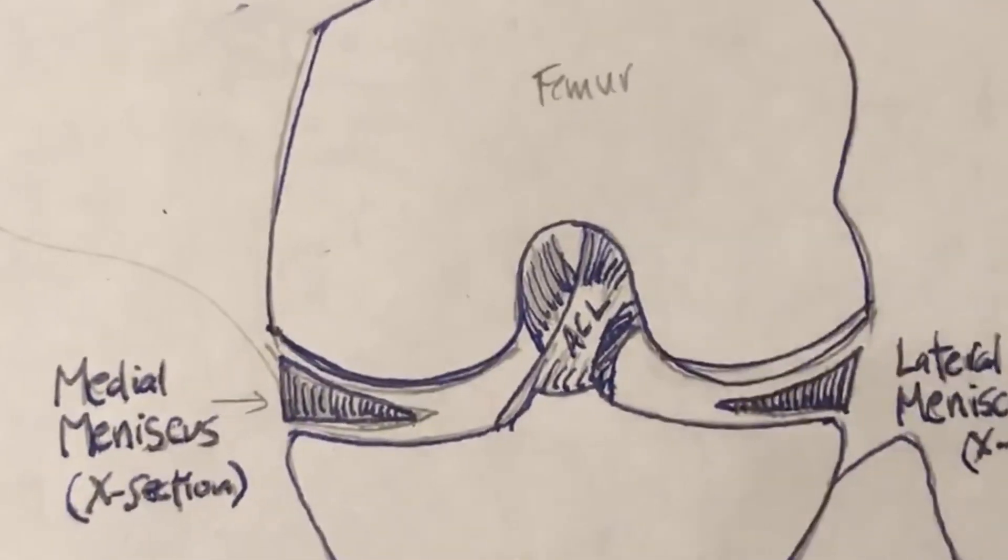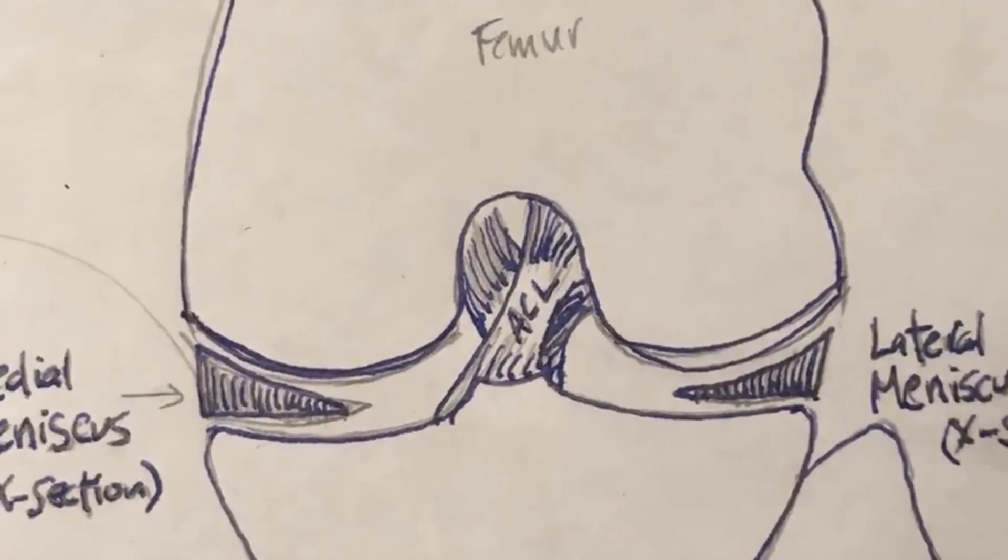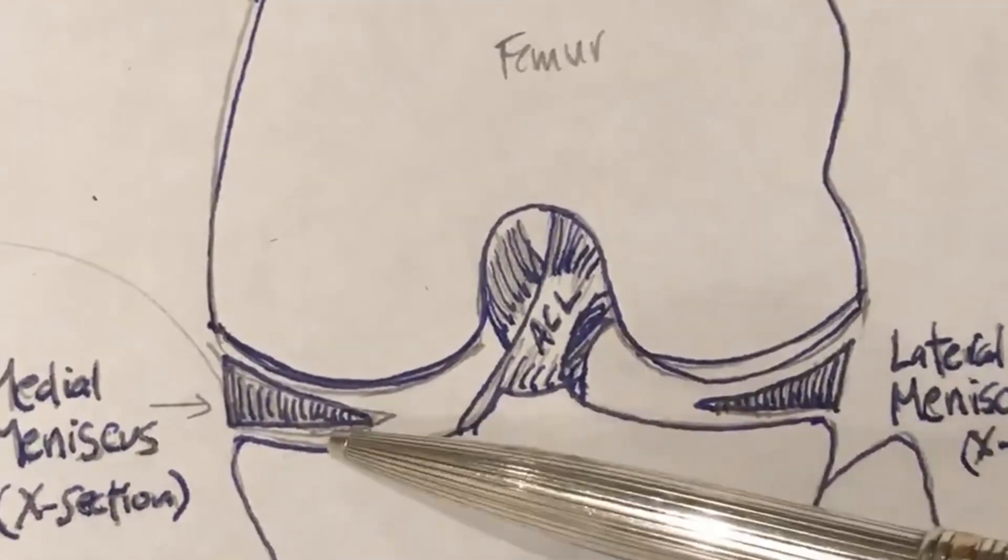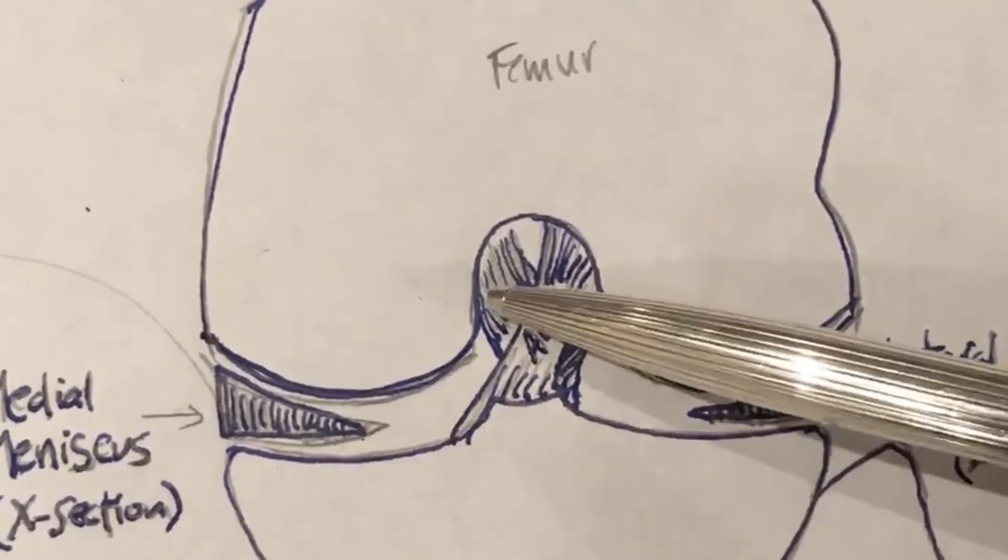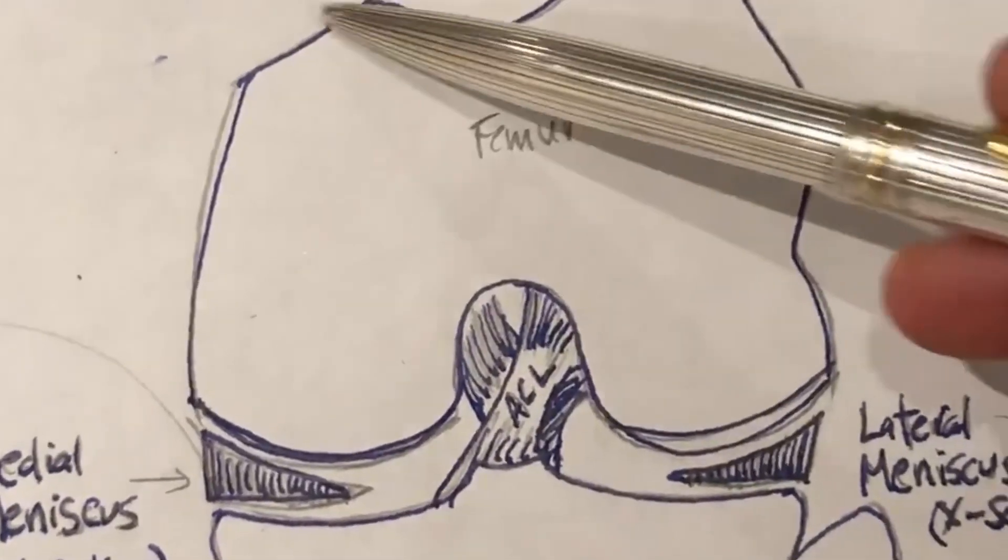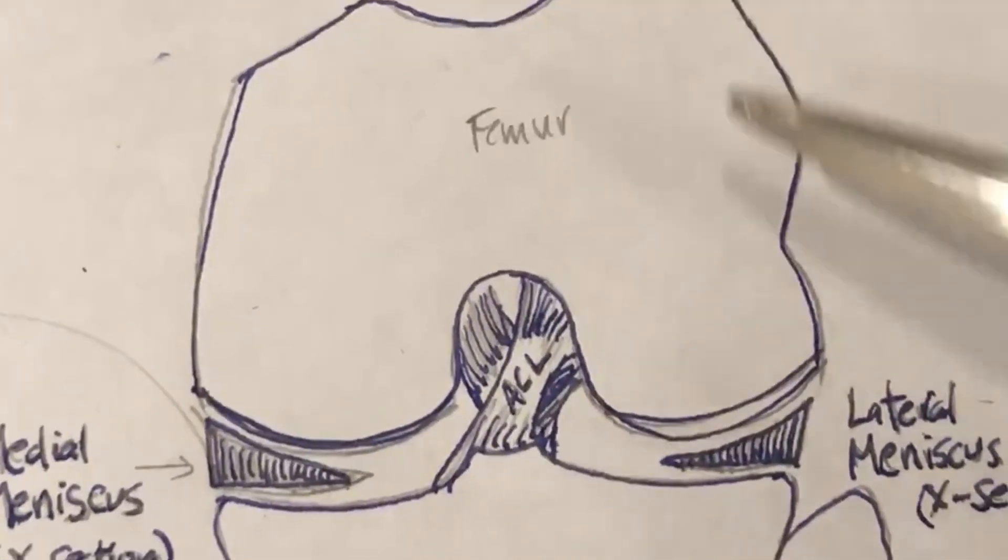Left knee, femur, tibia, lateral meniscus cross section, medial meniscus cross section, ACL, PCL for reference, trochlear groove. I did not include the patella.